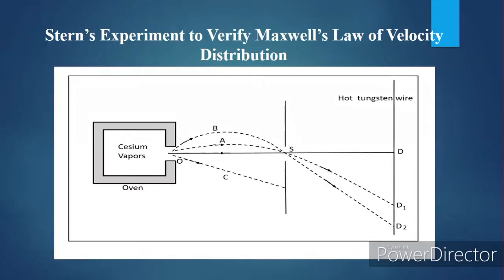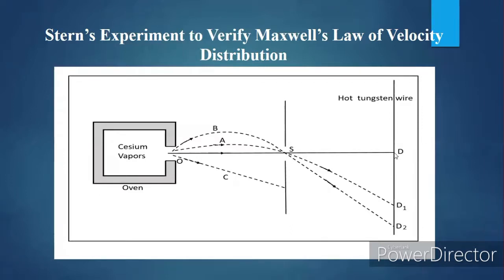The current at the detector represents the number of atoms reaching the tungsten wire. If you observe more atoms at D2, the current will be more. The tungsten wire is stationary, but the cylinder detector is movable. When you move the cylinder from position D2 toward D, you get very few molecules — only the highest velocity ones, which are least affected by gravity.